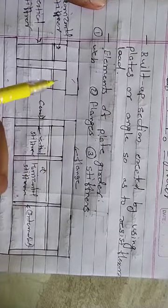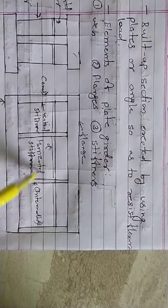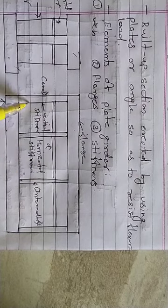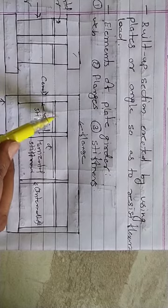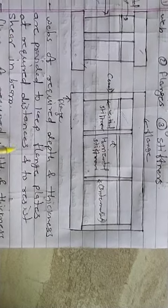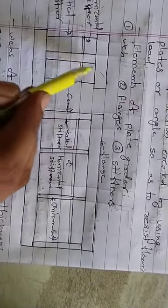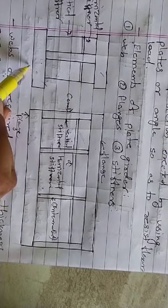This is the cross-section of the beam and this is the longitudinal section. The top flange, bottom flange, vertical stiffeners — including intermediate ones — and a horizontal stiffener are shown. The web is provided at the required depth and thickness to keep the flanges at a required distance and to resist shear in the beam.